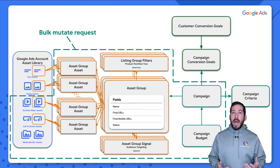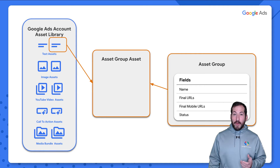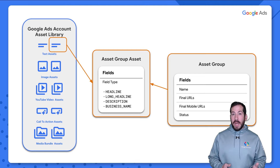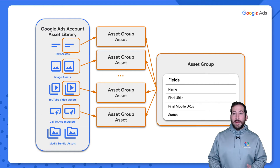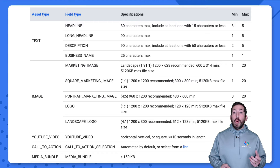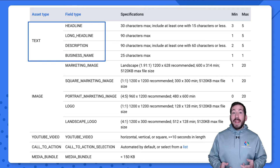Asset group assets contain references to both assets and asset groups in the form of resource names, but they also contain another important piece of information: the field type. Field type lets Google know how that asset should be used in an ad. For example, a text asset could have a field type of headline, long headline, description, or business name. When you start filling in those field types, Google can understand your intention with those different assets to effectively create ads for you. Any given asset can be one or more different field types.